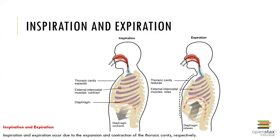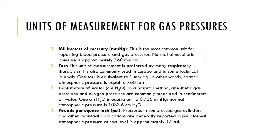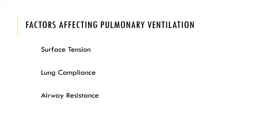Inspiration and expiration both occur due to expansion and contraction of the thoracic cavity, respectively. Important units of measure include millimeters of mercury — the most common unit for reporting blood pressure and gas pressures, with normal at 760 — as well as the torr, centimeters of water, and pounds per square inch.